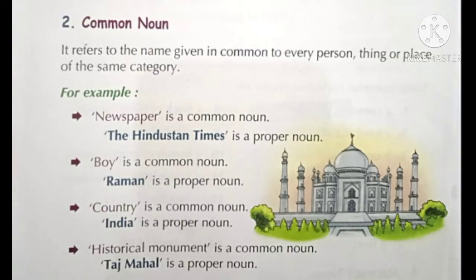Next is common noun. What is common noun? So, it refers to the name given in common to every person, thing or place of the same category. Jab hum kishi ek person ki baat na karke commonly persons ki baat karthate hain, ya phir kishi place ki baat karthate hain — hum ne ek particular place ka name nahi liya. Toh, vahan par hum common noun ka use karthate hain. Like, newspaper is a common noun. But if we use The Hindustan Times, that is proper noun.